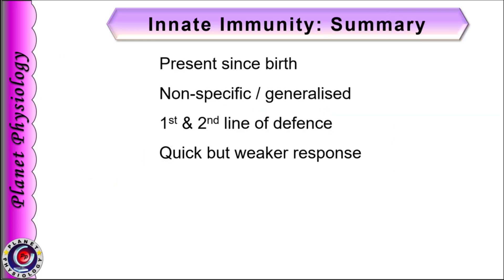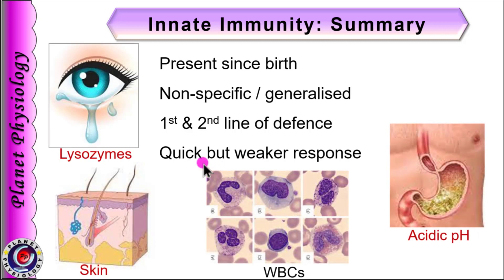Let us have a quick look at the important points of innate immunity. Innate immunity is present since birth. It is non-specific in nature and usually acts as first and second line of defense against invading organisms. It responds quickly to the pathogens but it is short-lasting. Examples of innate immunity include presence of skin and mucous membrane at the various surfaces, different cells like WBCs and natural killer cells, acidic pH of gastric juice, and bactericidals like lysozymes in tears and saliva.